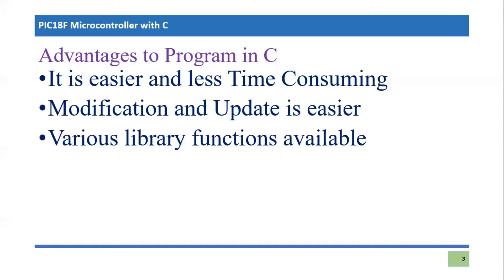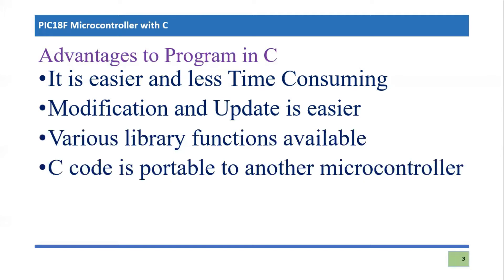Another very important advantage is that C code is portable to any other microcontroller. You can easily shift the code from one microcontroller to another, which is a wonderful attribute of C. Sometimes slight code modifications are needed, but usually no modification is required. When moving from one microcontroller to another, the changes are very slight and mostly involve only header files — for example, changing the header for PIC18F452 to PIC18F454. In contrast, this portability is simply not an option for assembly language, where the syntax differs significantly between microcontrollers.